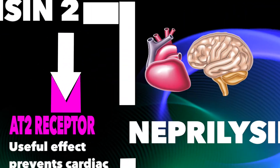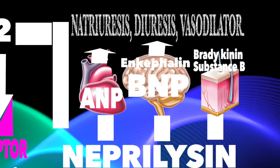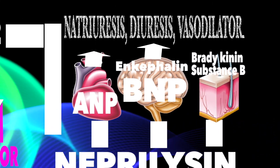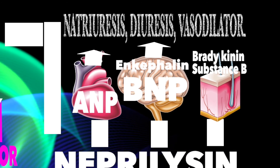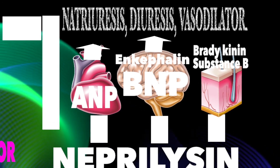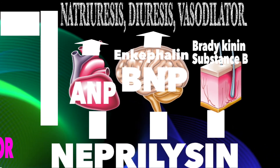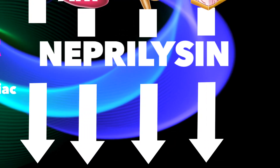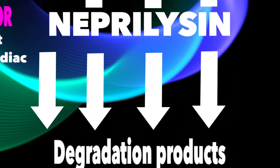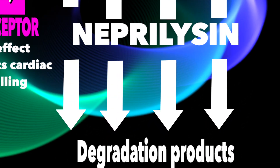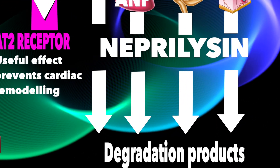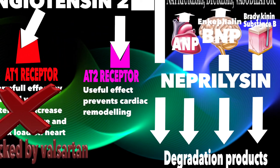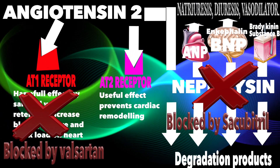The useful effect of AT2 may be lost if it is degraded by the neprilysin enzyme. Three other compounds that help in compensation of heart failure include atrial natriuretic peptide, brain natriuretic peptide, and substance P. They are all degraded by the same neprilysin enzyme as angiotensin-2.